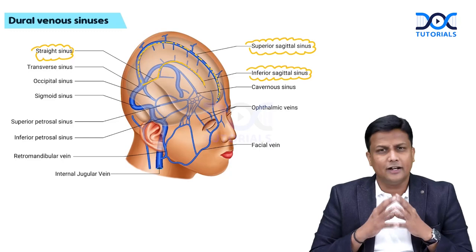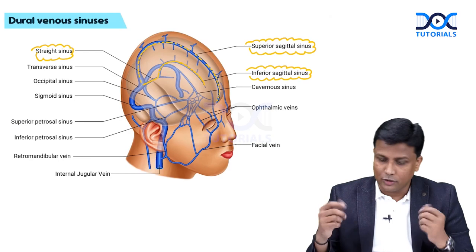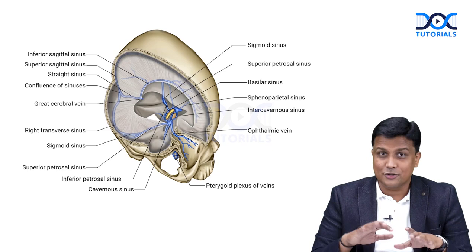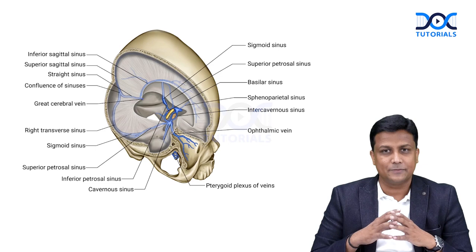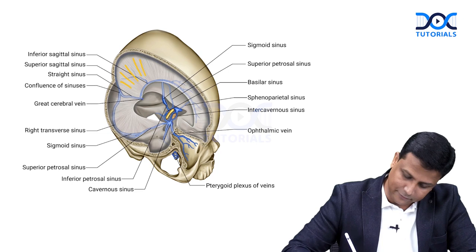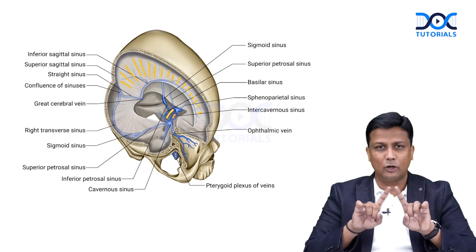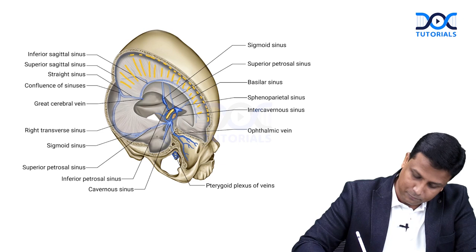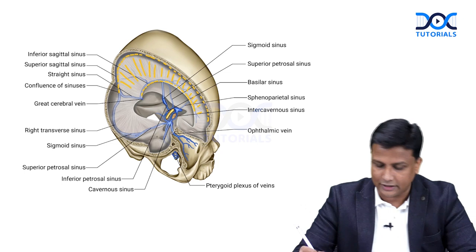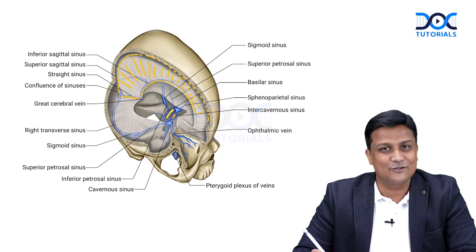These sinuses are exactly in the center — that is why the name is 'sagittal sinus.' One is above: the superior sagittal sinus; one is below: the inferior sagittal sinus. Looking at a diagram with the dural folds, the falx cerebri lies between the two cerebral hemispheres. The superior sagittal sinus is in the upper border of the falx cerebri, and the inferior sagittal sinus is in the lower border. Both communicate with the straight sinus.